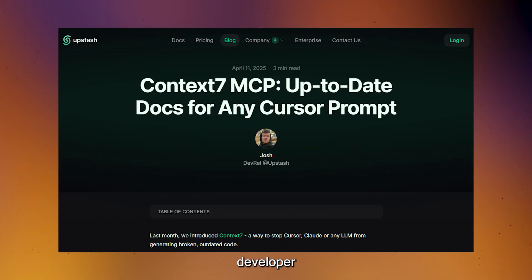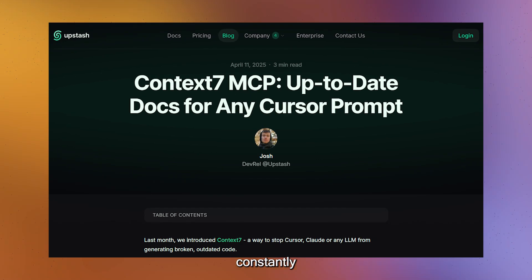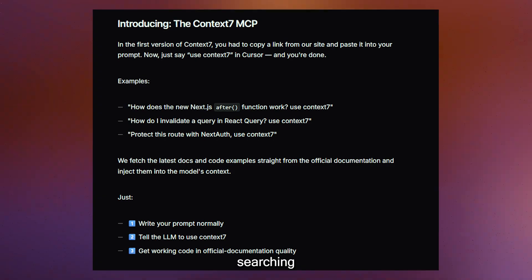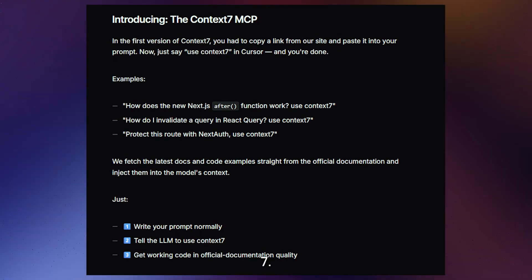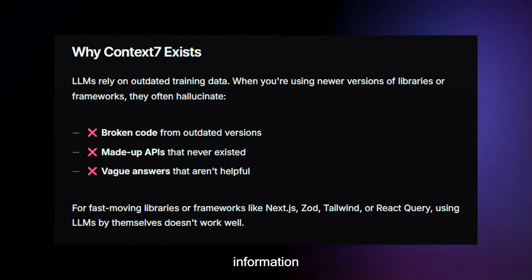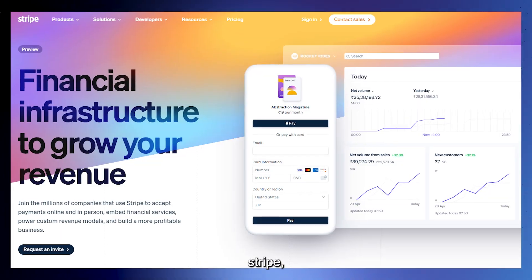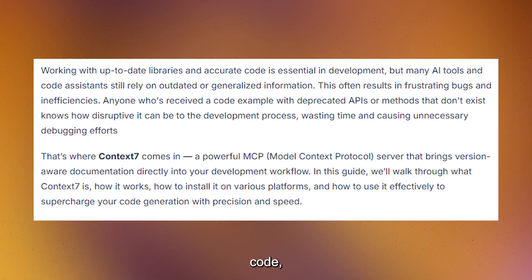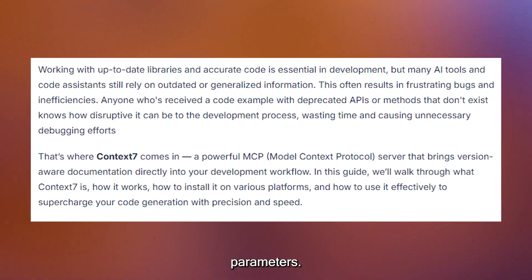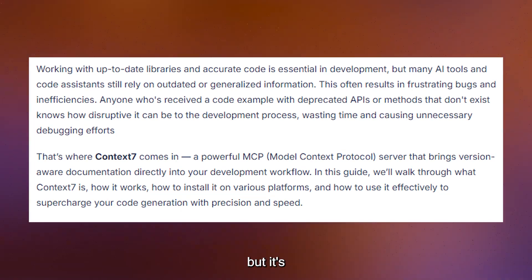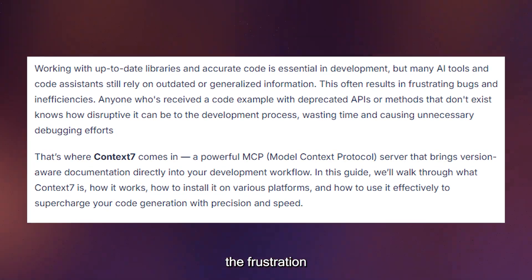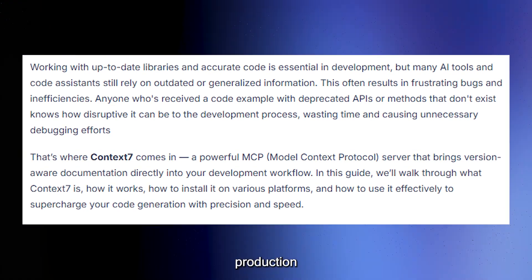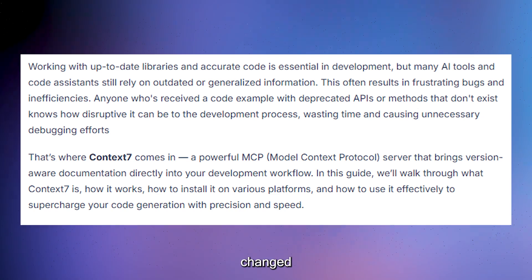Context 7 addresses a common developer pain point: keeping track of constantly changing API documentation. Instead of your team searching through multiple documentation sites, Context 7 maintains current API information for popular services like Stripe, Twilio, and others. When your AI needs to generate integration code, it has access to the latest endpoints and parameters. It prevents the frustration of implementing code that works in tutorials but fails in production because the API has changed.